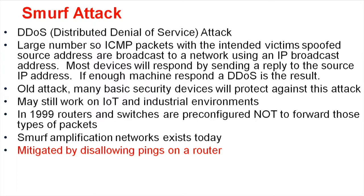The machine doesn't really go offline — it could crash, but most likely it'll just be so busy answering those calls that legitimate users can no longer reach it. It's an old type of attack; many basic security devices will protect against it. It may still work on Internet of Things networks and industrial environments with older gear. In 1999, routers and switches were pre-configured not to forward those ICMP packets. Smurf amplification networks still exist today and are mitigated by disallowing pings on a router.